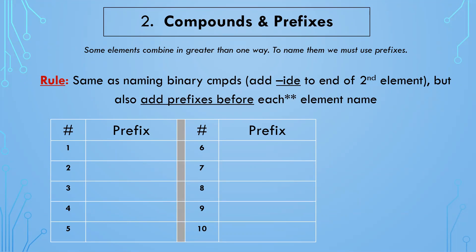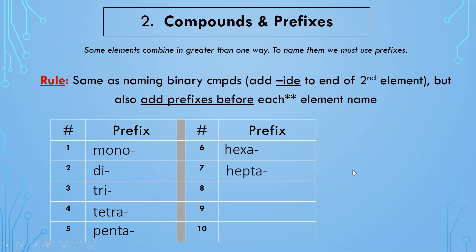The higher ones are not used as commonly, but you may still see them and need to know them. Prefix one is mono. Two is di — in science we use di, not bi. Three is tri, four is tetra, five is penta, six is hexa, seven is hepta, eight is octa, nine is nona, and ten is deca.